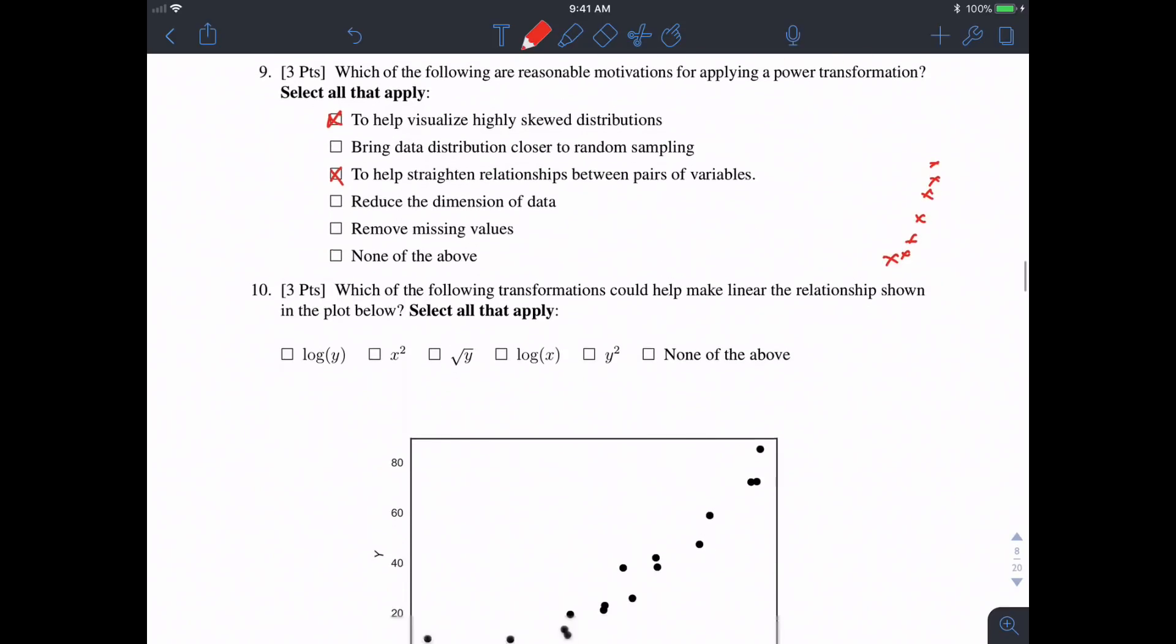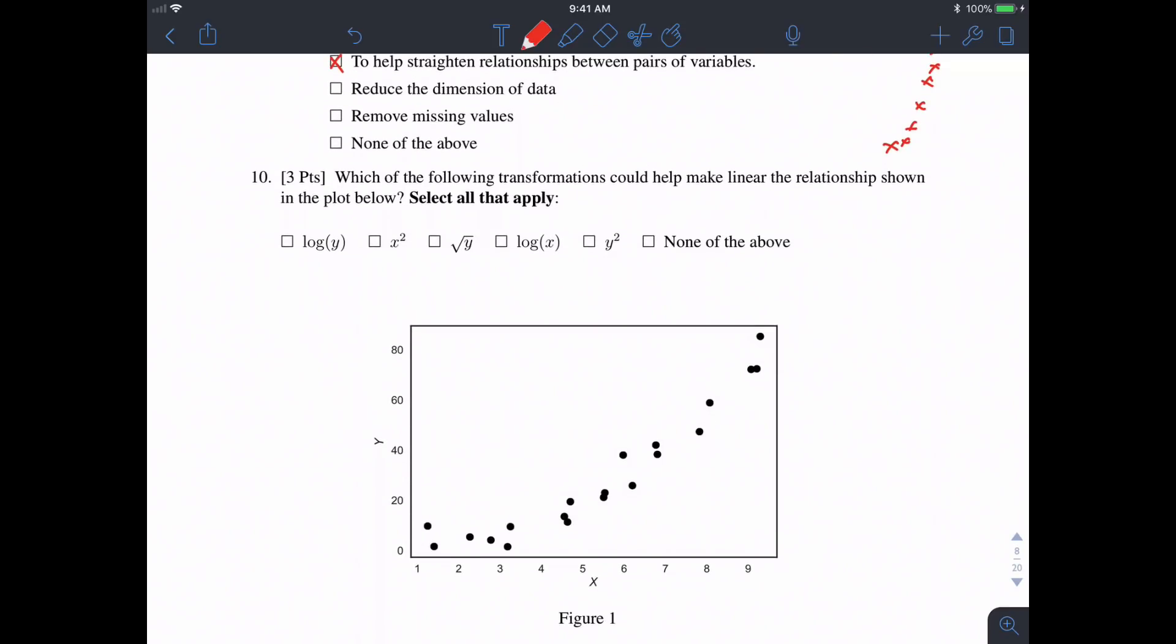Cool. Question 10: which of the following transformations could help make linear the relationship shown in the plot below?